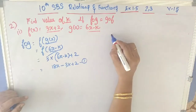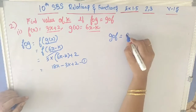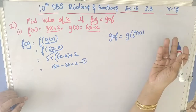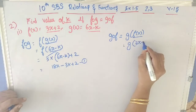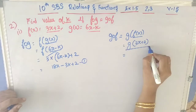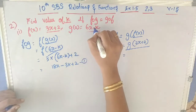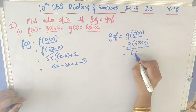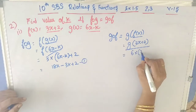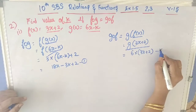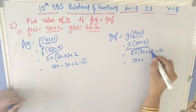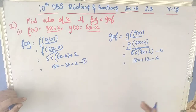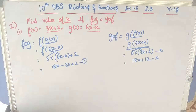Now we have to find g∘f, which is g of f(x). f(x) = 3x + 2, so we find g(3x + 2). In g(x) = 6x − k, replace x with 3x + 2: 6(3x + 2) − k = 18x + 12 − k. I am marking this as equation 2.